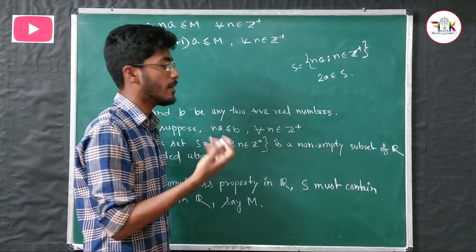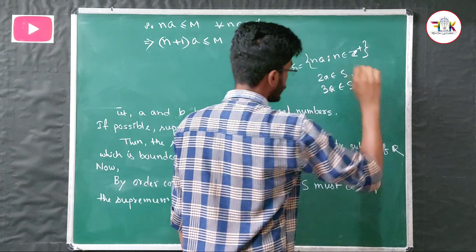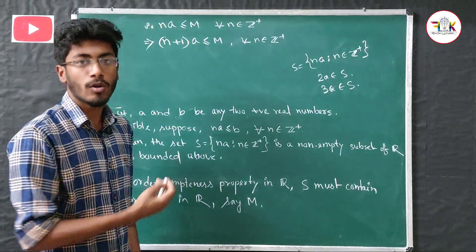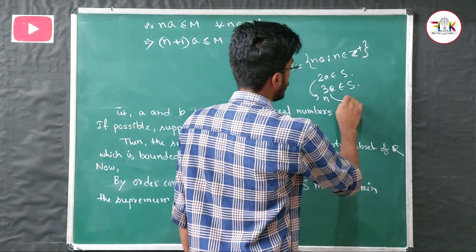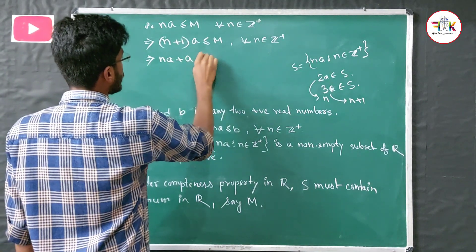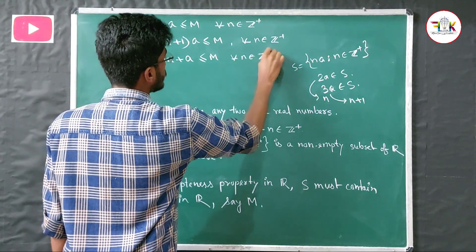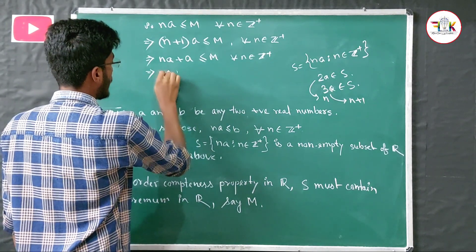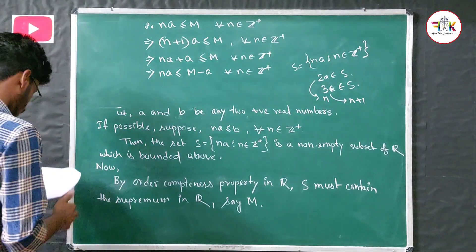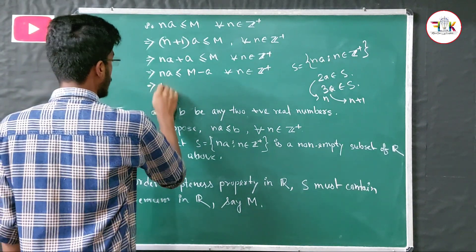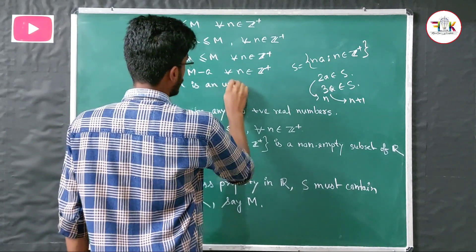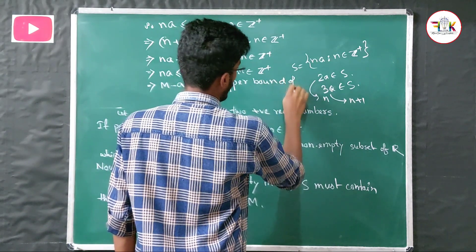From (n+1)a ≤ M, we get na + a ≤ M, which gives na ≤ M - a for all n belonging to Z+. This means M - a is an upper bound of S.